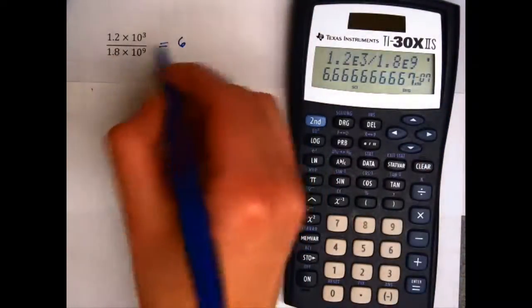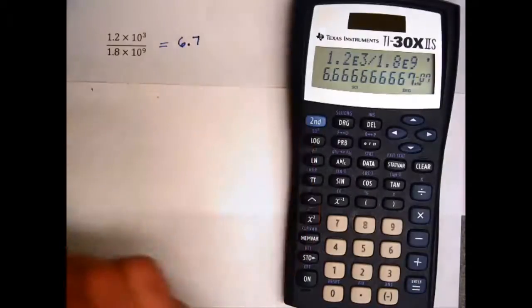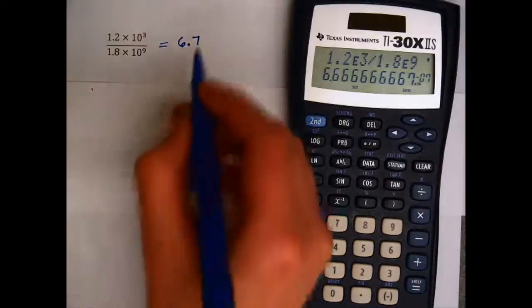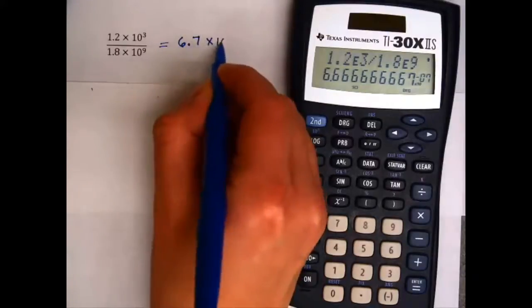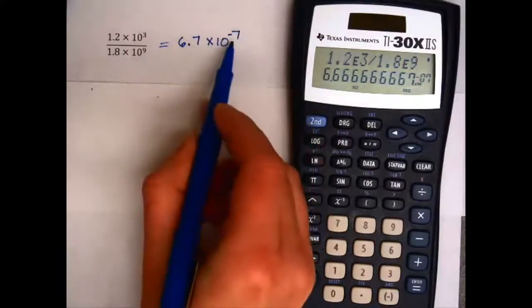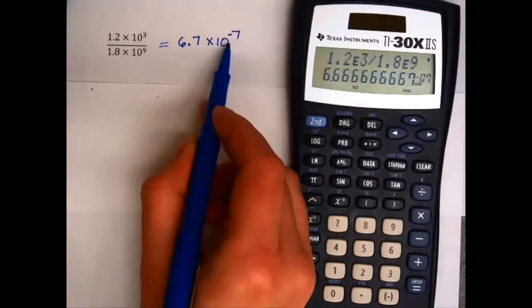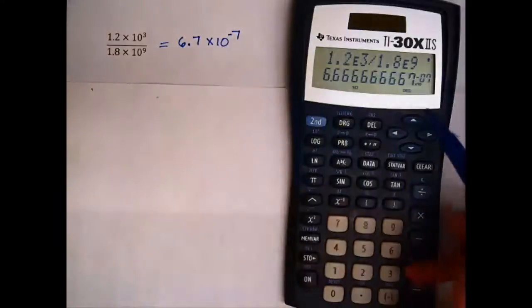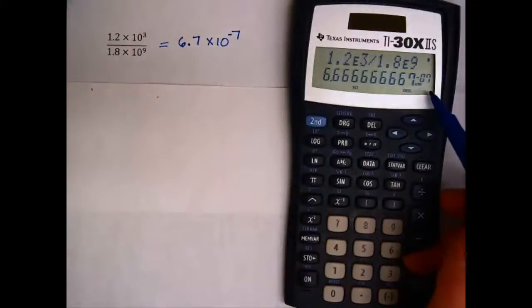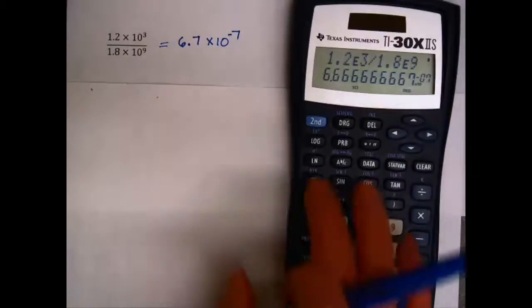Again, there's really only two significant figures here, so I'm going to round this repeating 6 off to 6.7. And we have a negative exponent. So what does that negative exponent mean? Well, remember, this is the value in scientific notation. Let's look at this value in standard or regular notation.